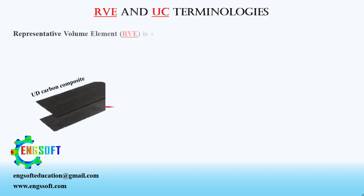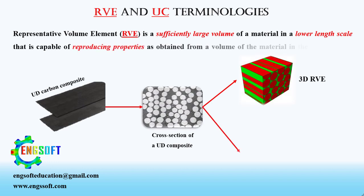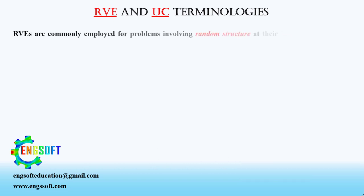A representative volume element, or RVE, is a sufficiently large volume of a material at a lower length scale that is capable of reproducing properties as obtained from a volume of the material at the upper length scale. That is why this volume is called representative — you can obtain properties from this volume which are representative of the whole. RVEs are commonly employed for problems involving random structure at their lower length scale.